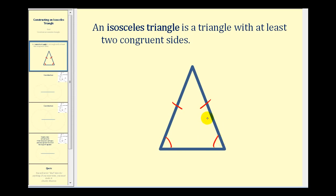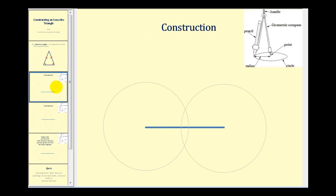To perform the construction we need a straight edge and a compass. We start with a segment of a specified length. If we're free to construct any isosceles triangle we want, the only restriction is that the radius of our compass must be more than half the length of the given segment. If given a specific length for the remaining two sides, you can mark that length with your compass.